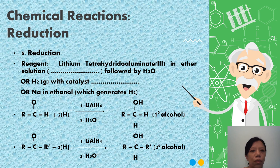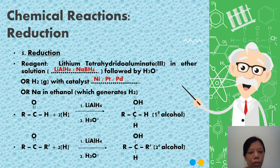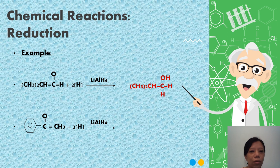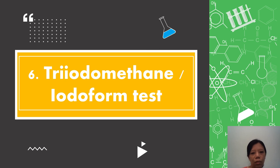Reduction. Carbonyl compounds can undergo reduction using lithium tetrahydridoaluminate(III) in ether solution followed by dilute acid, or you can use sodium borohydride followed by dilute acid, or you can use hydrogen gas with catalyst nickel or platinum or palladium, or you can use sodium in ethanol which generates hydrogen gas. For aldehydes, it will undergo reduction to form primary alcohols. For ketones, it will form secondary alcohols.